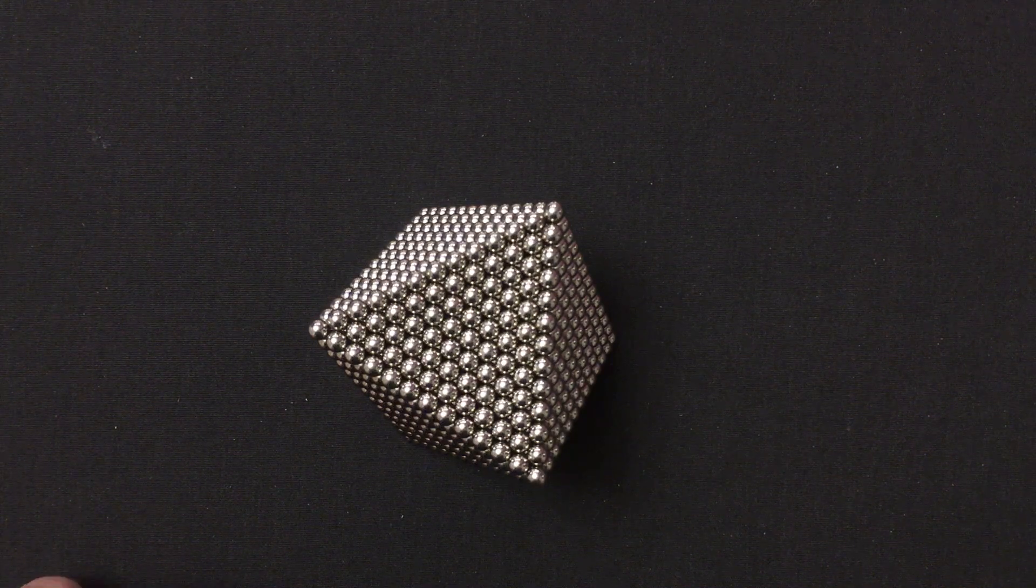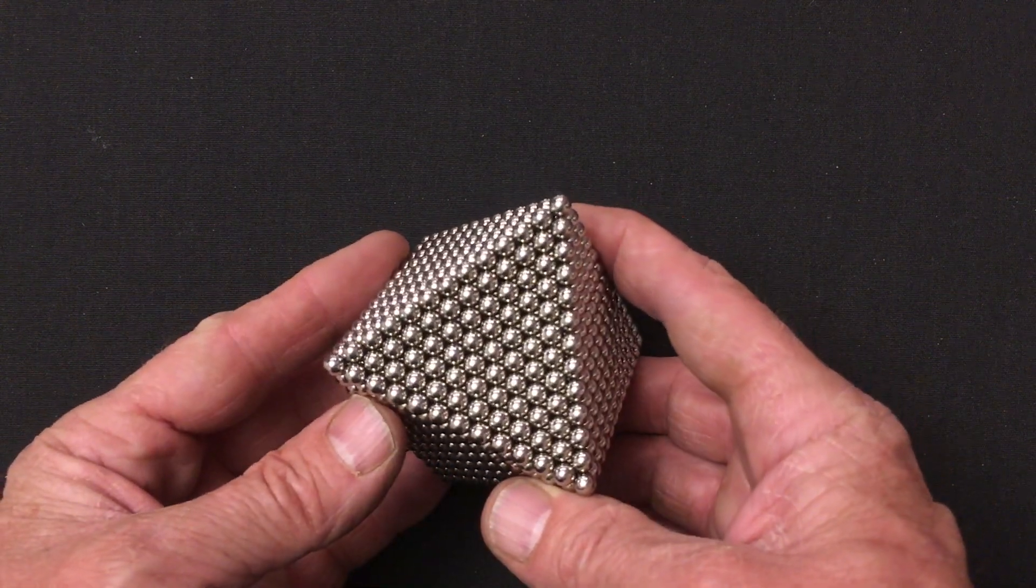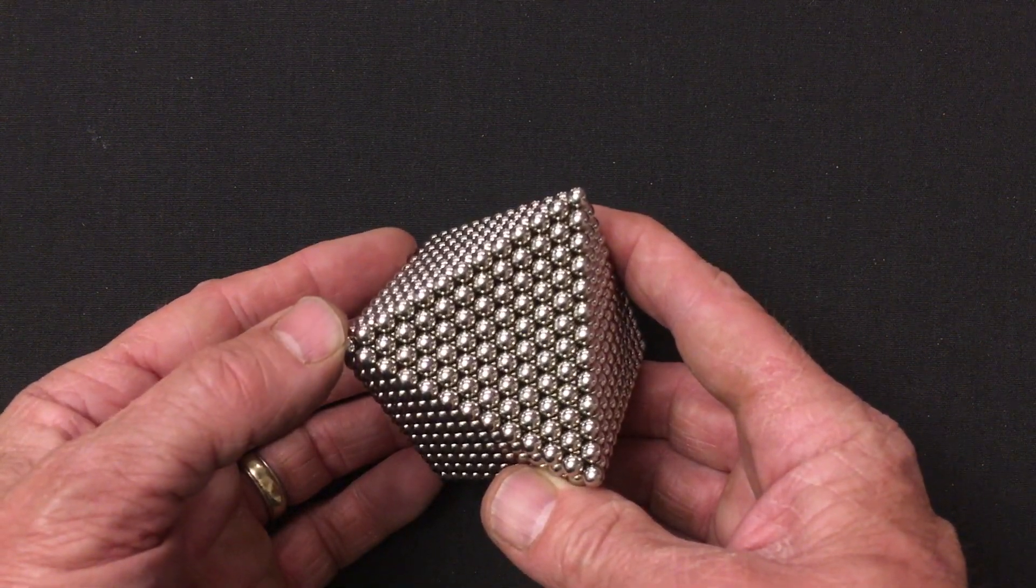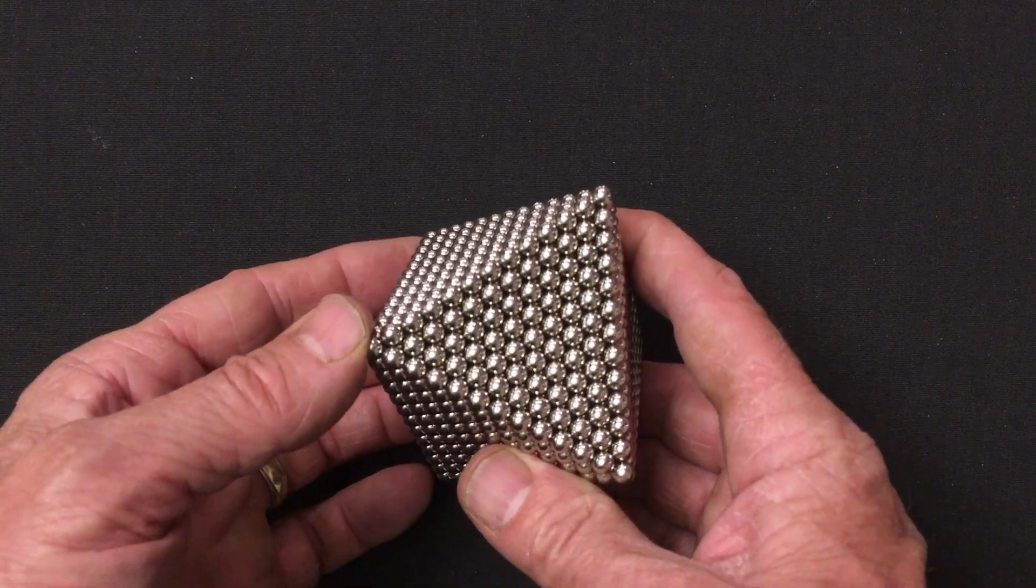In this video I show how to build a reinforced double walled octahedron. This is a double walled octahedron that has not been reinforced. In another video I show how to build this.